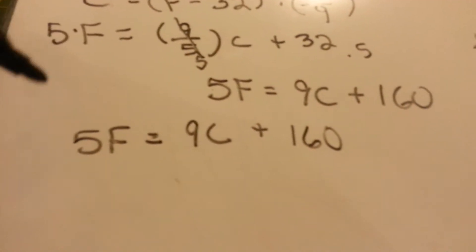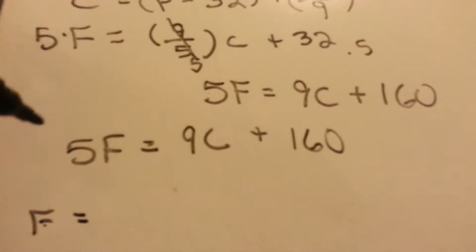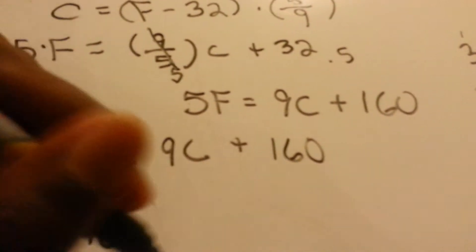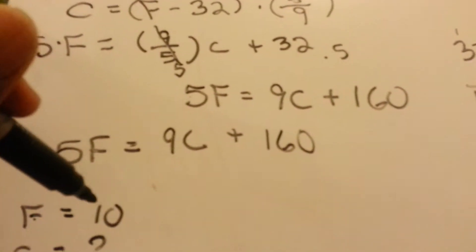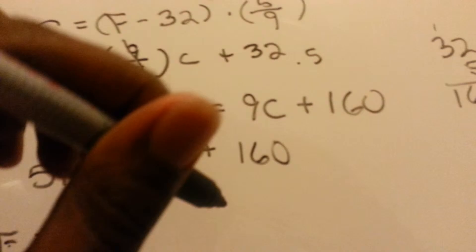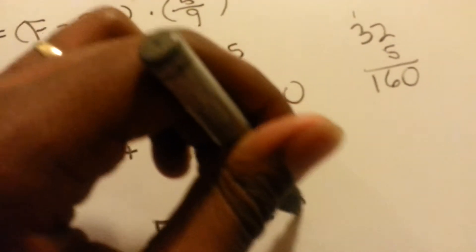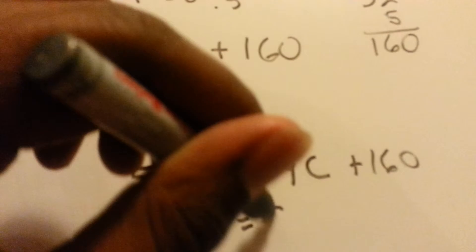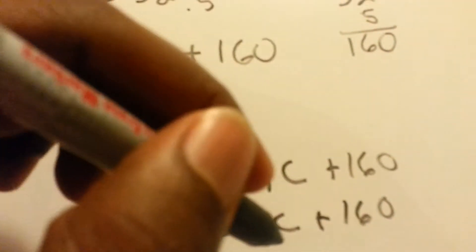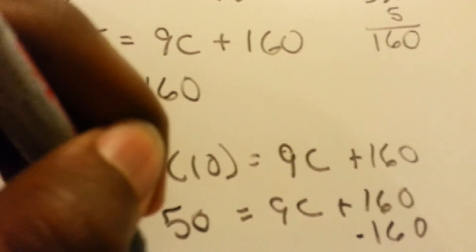And let's say, for example, we have Fahrenheit equals 10 degrees. We want to find out what the C would equal. So you just plug that 10 in for the F. 5 times 10 equals 9C plus 160. You have to get the like terms together, so we would subtract 160 from both sides.